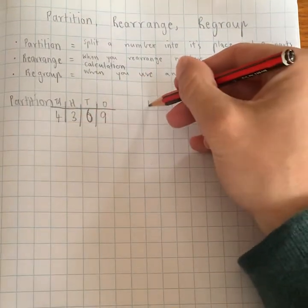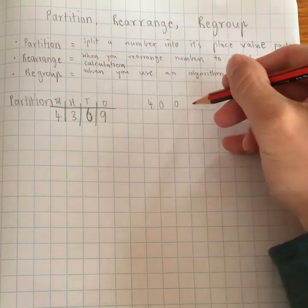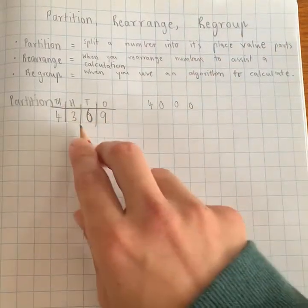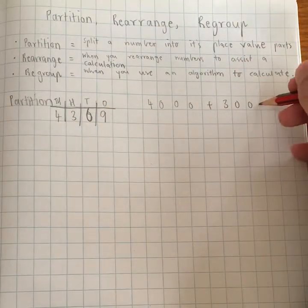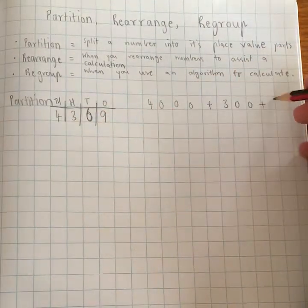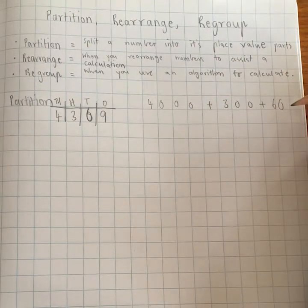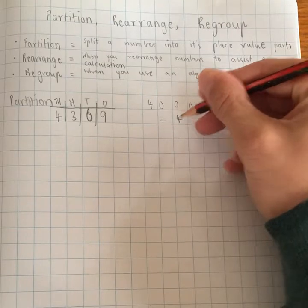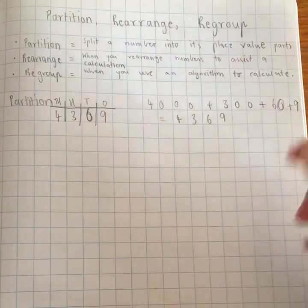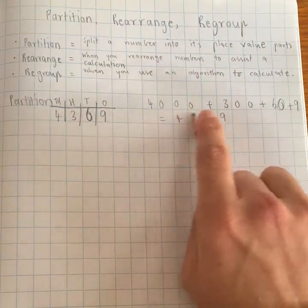So for this one, we've got 4,000, which was written like that, plus 300, written like that, plus six tens, which is written like this, plus nine ones, which makes up our number of 4,369.